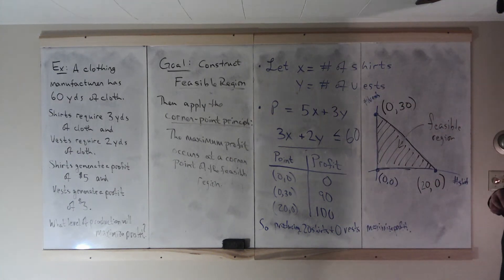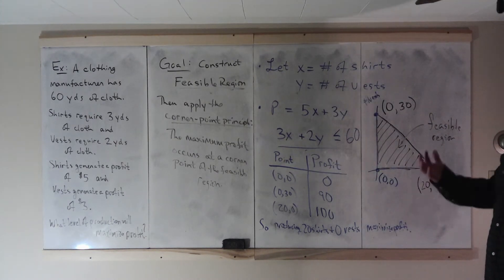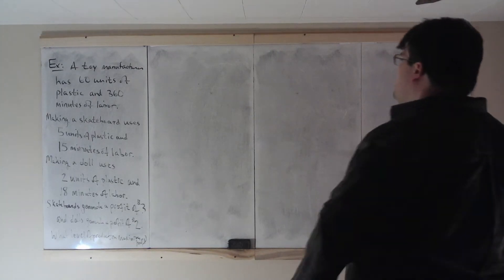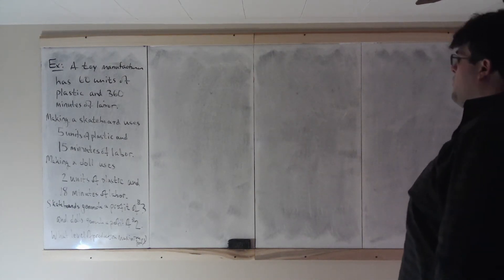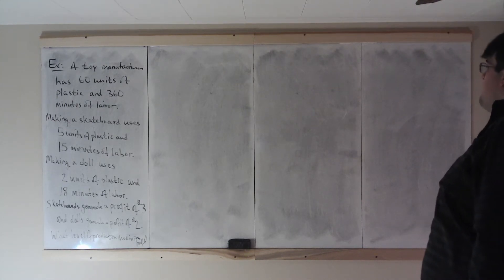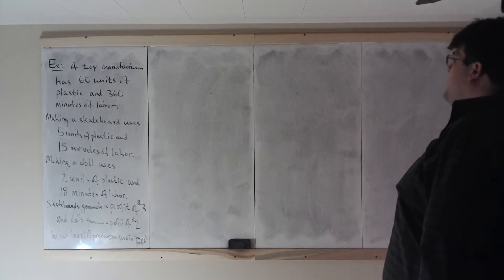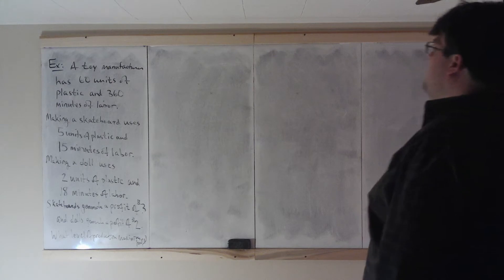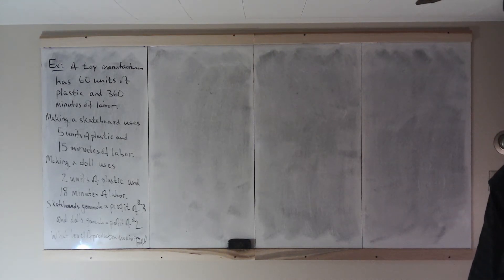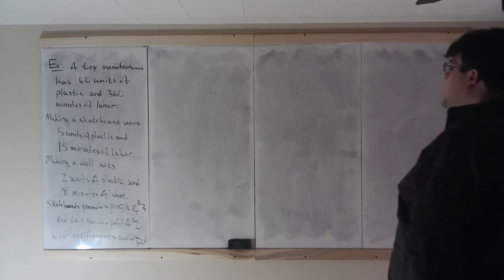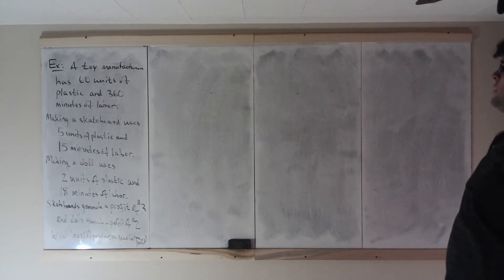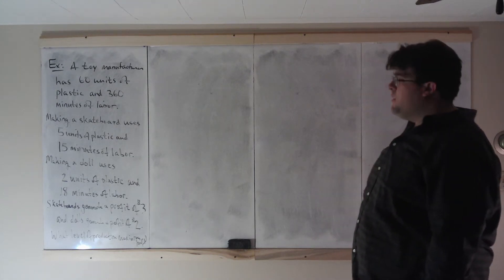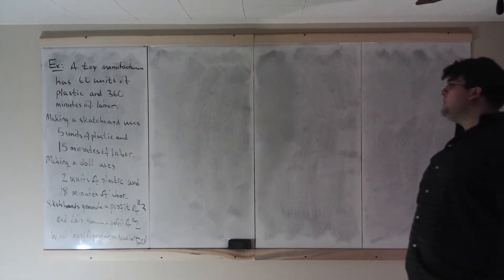We haven't answered the question yet: what level of production will maximize profit? The conclusion: producing 20 shirts and 0 vests maximizes profit. This example had only one constraint. What would happen if we have two constraints? Let's look at the next example.